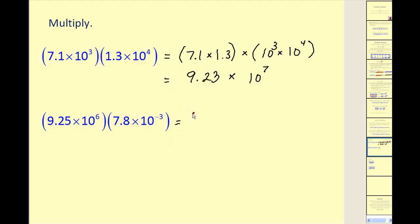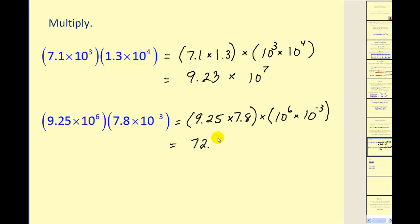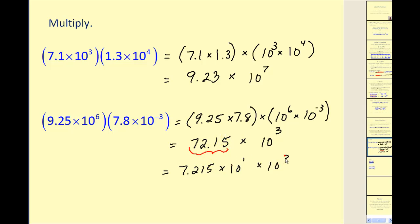In the next example, we set it up the same way, but the product comes out to 72.15 times 10 to the power of positive 3. This is the correct value but not the correct form — remember A has to be less than 10 — so we need to convert this to scientific notation. This would be 7.215 times 10 to the first times 10 to the third, giving a final answer of 7.215 times 10 to the fourth.